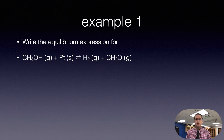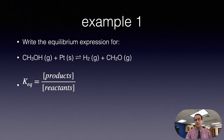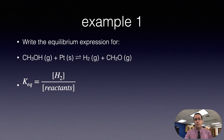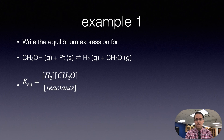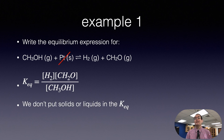Here's an example: methanol as a gas reacts with platinum, which is a solid, producing hydrogen and formaldehyde — both gases — and the equation is balanced. The equilibrium expression K_eq is products over reactants. Hydrogen is a product with a coefficient of one, formaldehyde is a product with a coefficient of one, and methanol is a reactant in the denominator with a coefficient of one. Platinum is a solid, so we do not include it in the equilibrium expression.